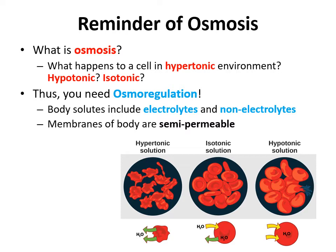Osmoregulation is achieved across many membranes within the body, but excess electrolytes and wastes are also transported to the kidneys and excreted to help maintain osmotic balance. This lesson covers not just the movement of electrolytes and water, but also the excretion through the kidneys of excess waste products.